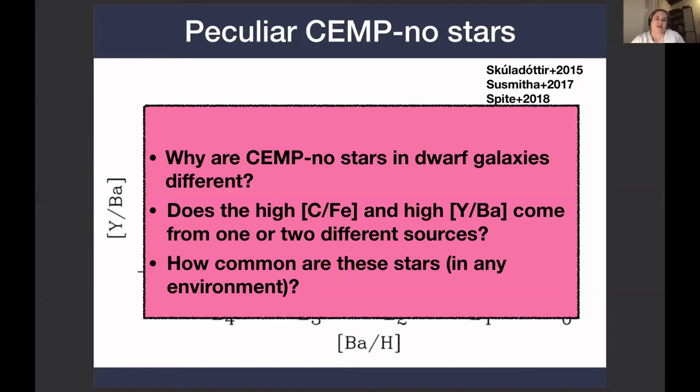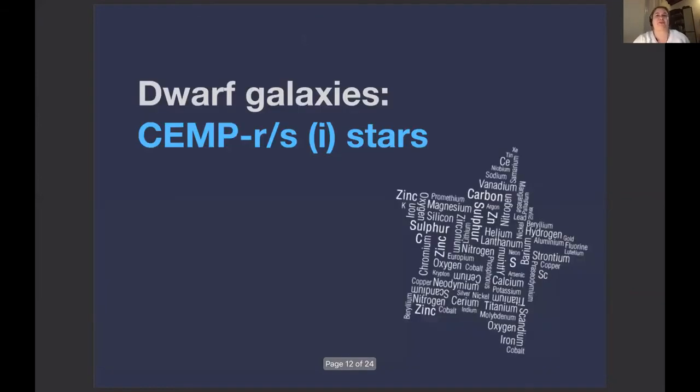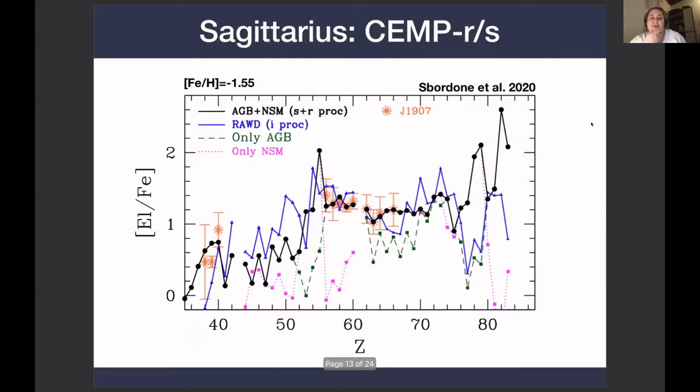So now we're going to change topics slightly, but not drastically, and look at what is known about the CEMP-r/s, or CEMP-i stars, in dwarf galaxies. Earlier this year, there was a very interesting star found in the Sagittarius dwarf spheroidal galaxy that clearly does not fit a simple s-process pattern, but requires a more complicated explanation.